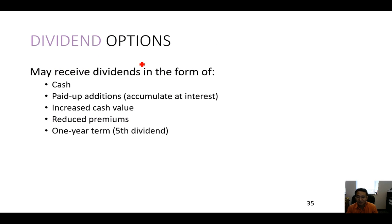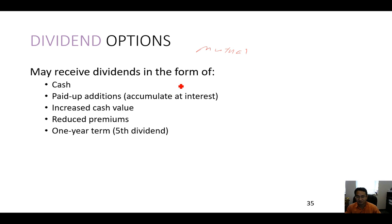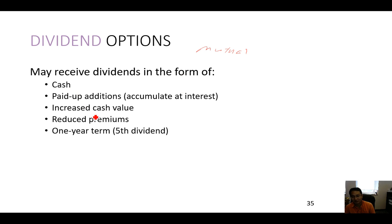Dividend options — some life insurance is in mutual form, like a community or credit union. At the end of the year, if they collect more premium than their expenses, they will pay out the difference — either cash, paid-up additions, or you get a lower premium next year.